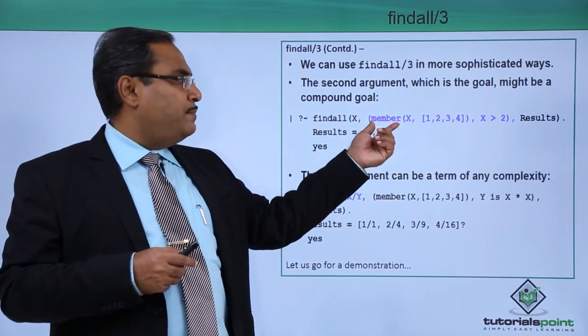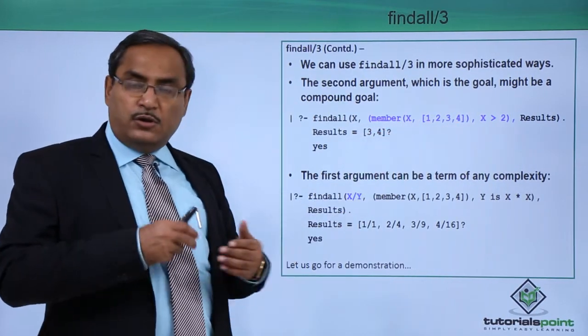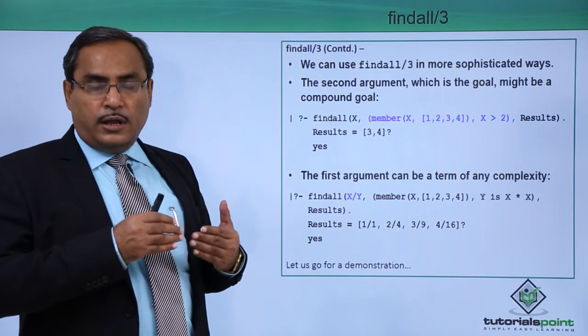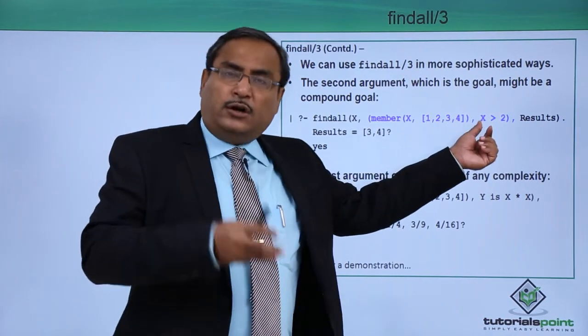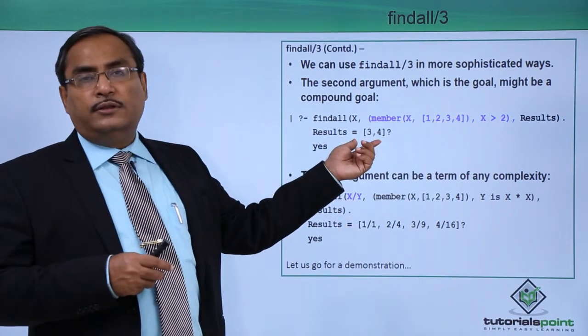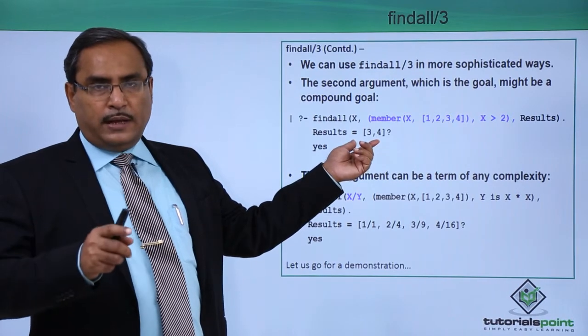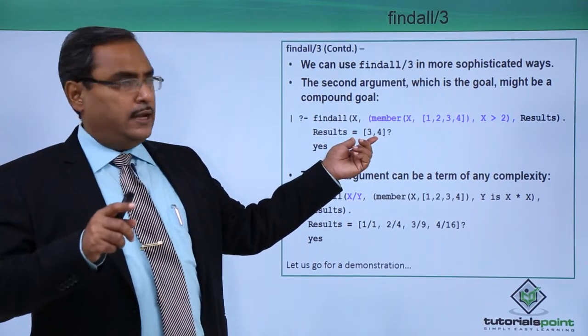Here we have written this one as member(X, [1,2,3,4]) is the list. X will have the values 1, 2, 3, 4 in the output, the goal output, and we are putting another condition X is greater than 2. So Results will have the value only 3 and 4. 1 and 2 will not be coming as 1 and 2 are not greater than 2.